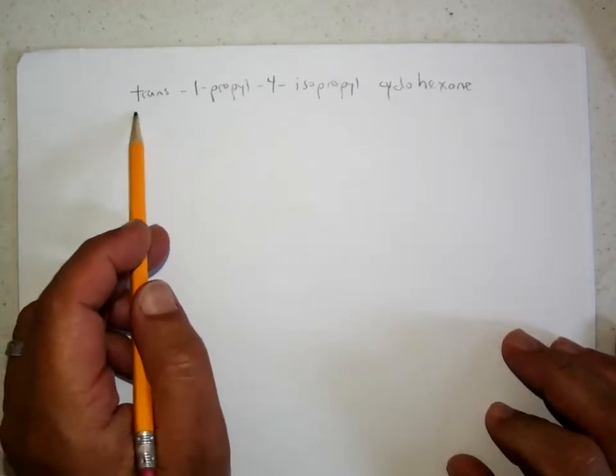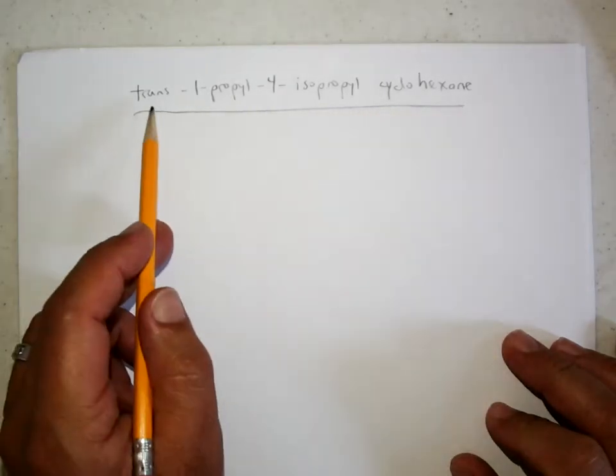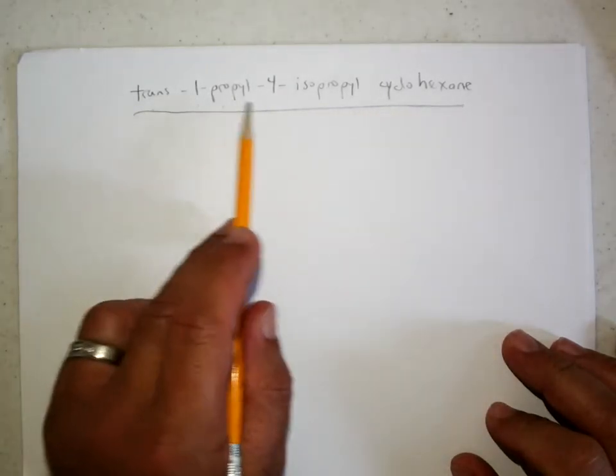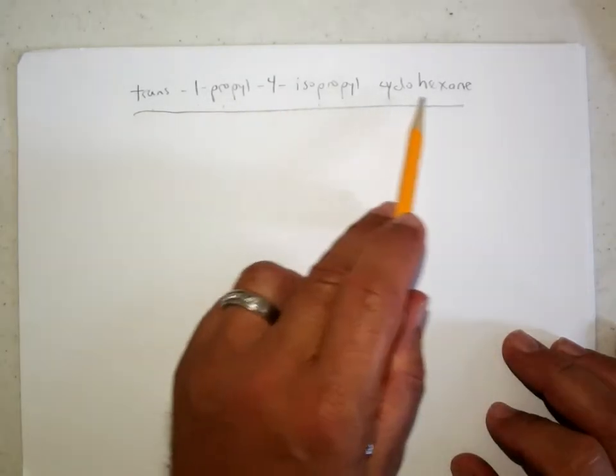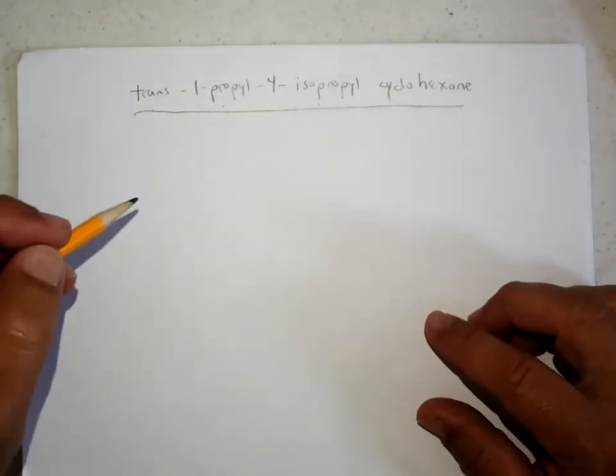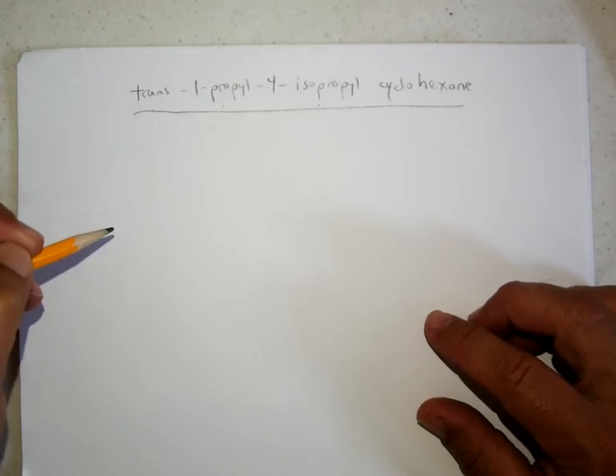All right, so this question asked about conformational isomers of trans-1-propyl-4-isopropyl cyclohexane, and the first thing we have to do is make sure we get the right constitutional and geometric isomer.